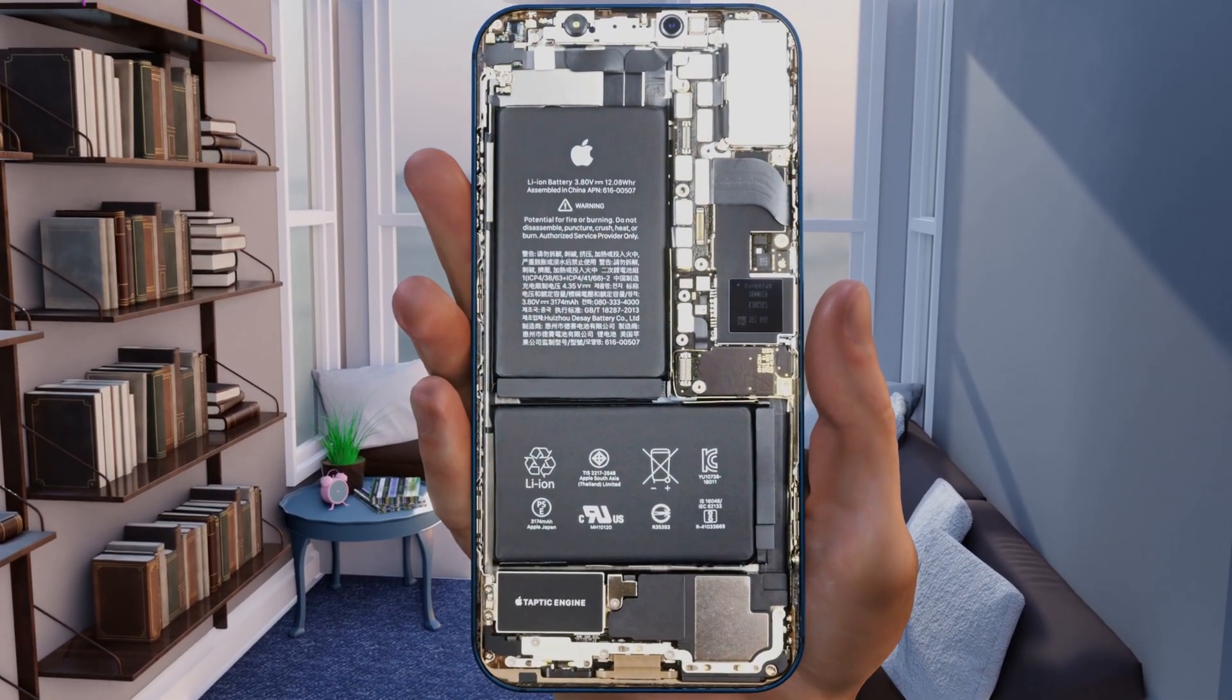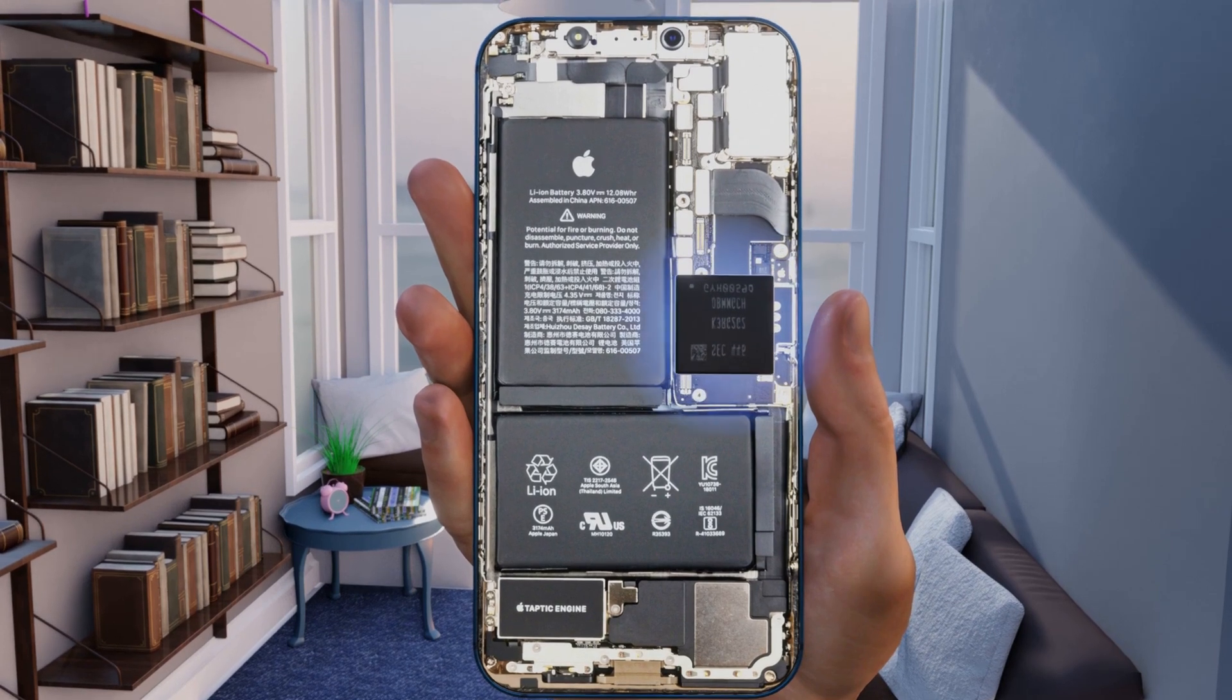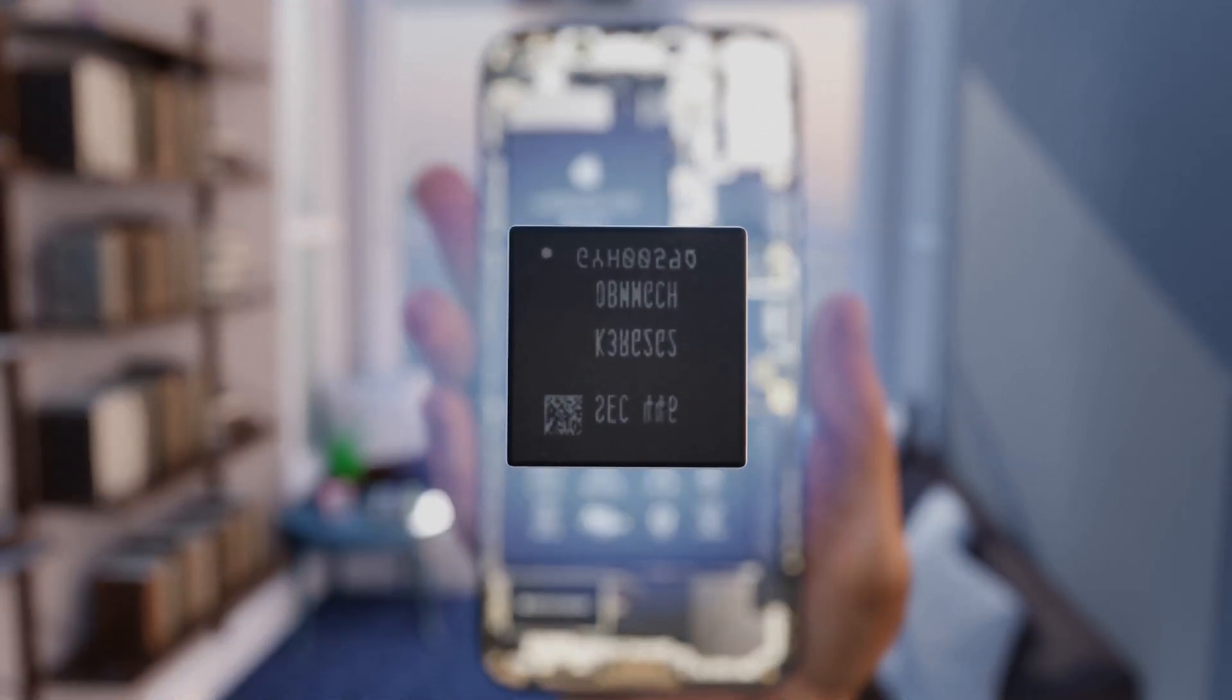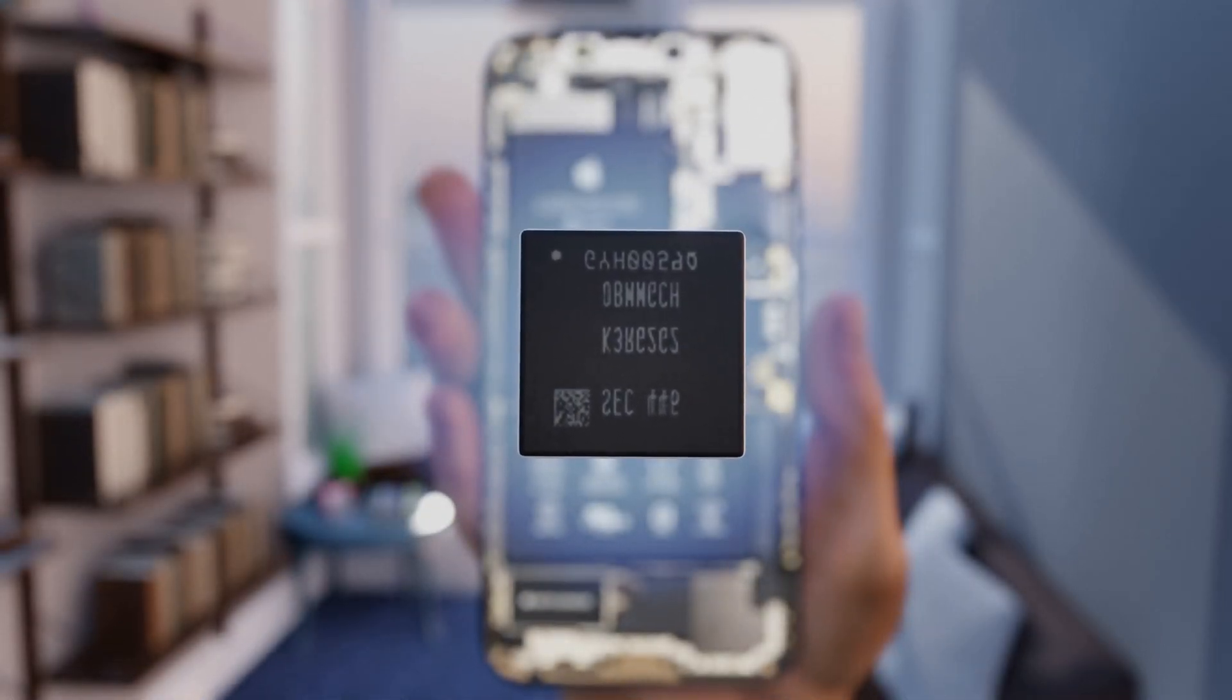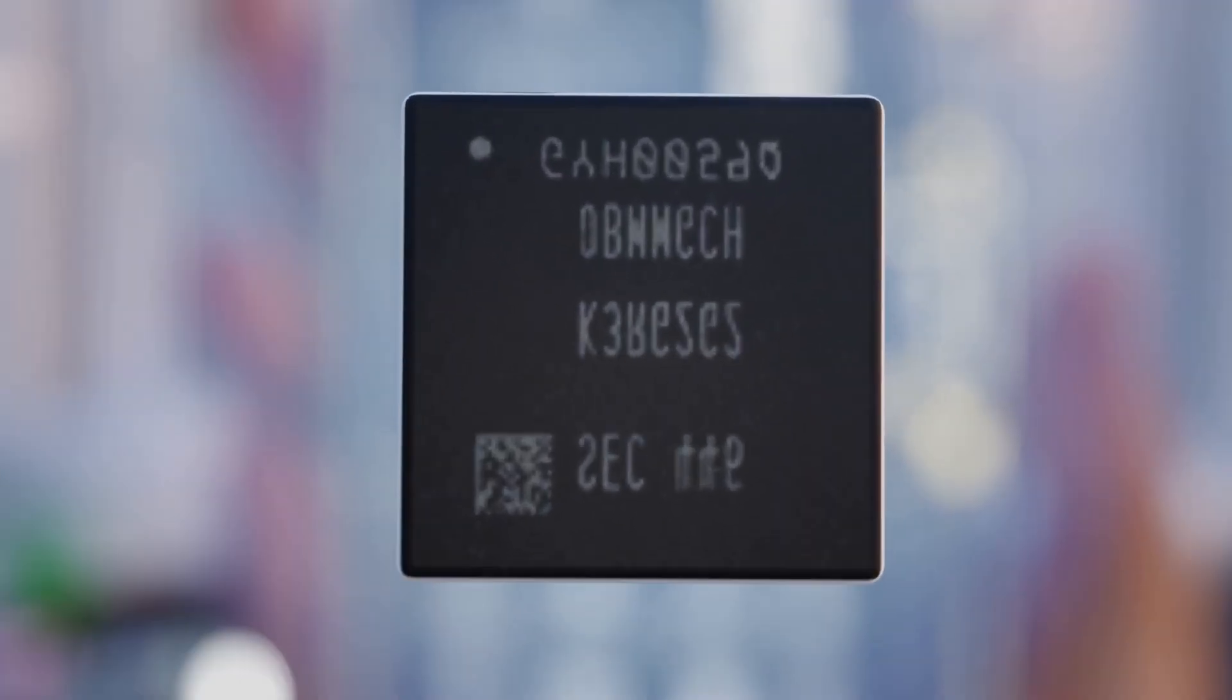Let's take a close-up view of your smartphone's RAM. This is RAM, which consists of billions of FG MOS transistors. Let's dive deep into your smartphone memory and see how this transistor works.